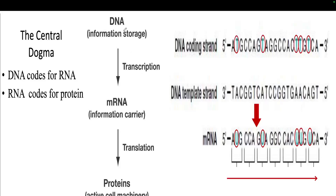In DNA there are two parts: one is the exon and another is the intron. In mRNA, only the coding part will be there, which will go on to make the protein. The intron part is removed during processing. When DNA codes for RNA, this procedure is called transcription, and when RNA is converted into protein, the process is called translation.